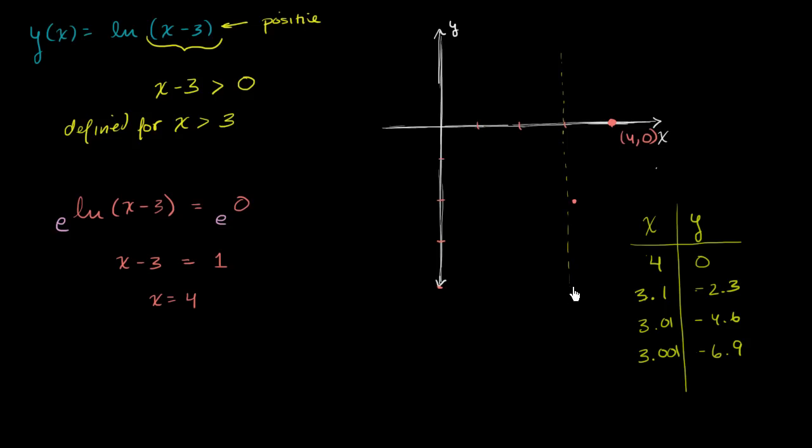So our graph is going to look something like, my best attempt to draw it freehand, is going to look something like that. So do we have a vertical asymptote?